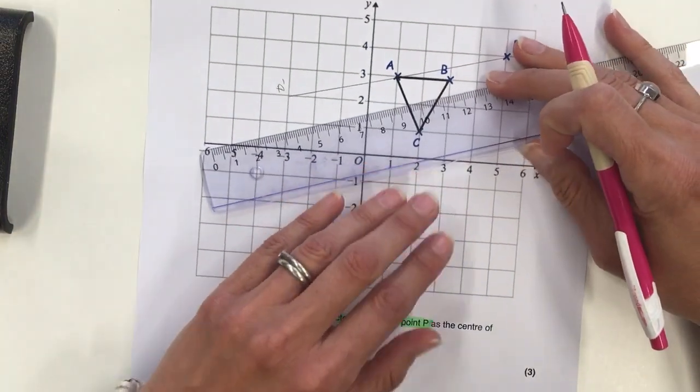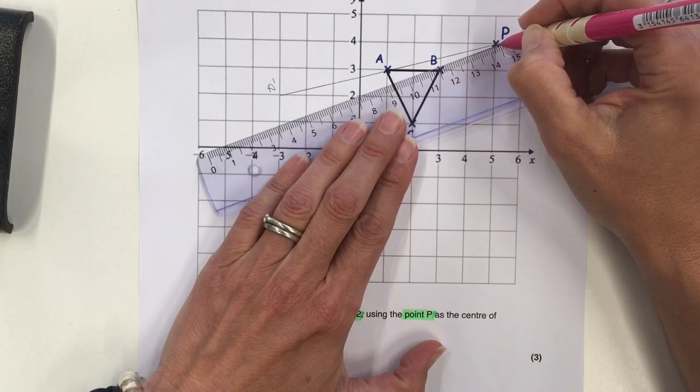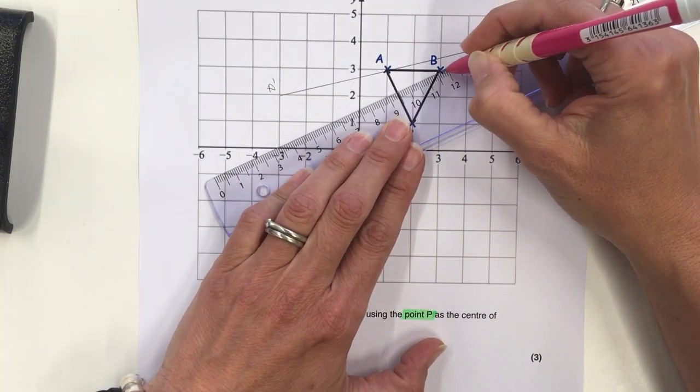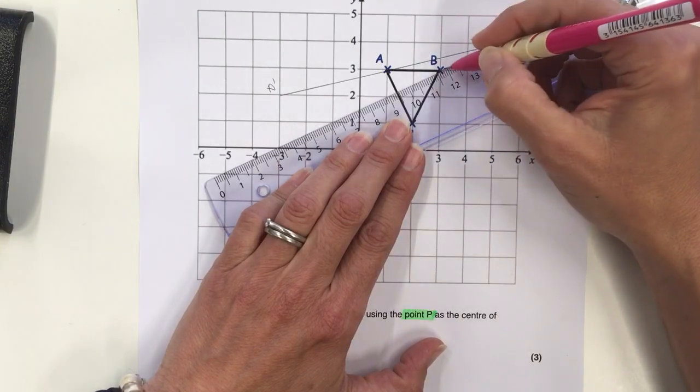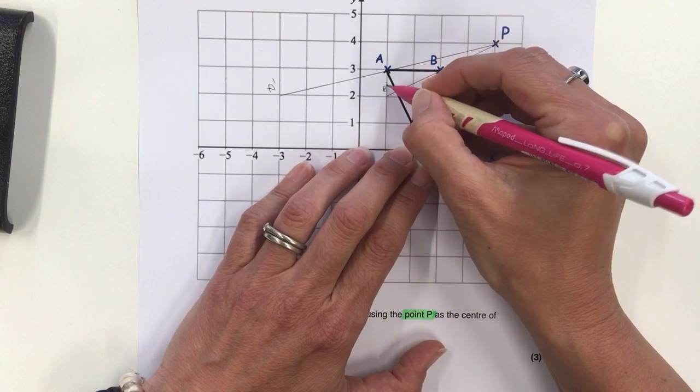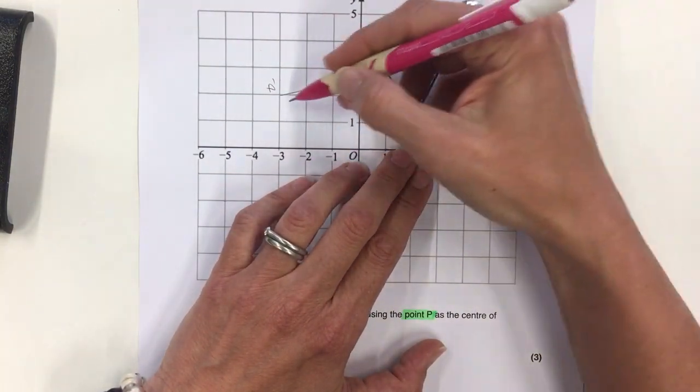Then I do the same with the next vertex. I draw a line between P and the vertex, then double that line. I'm going to call that B dash. That forms the corresponding top length.